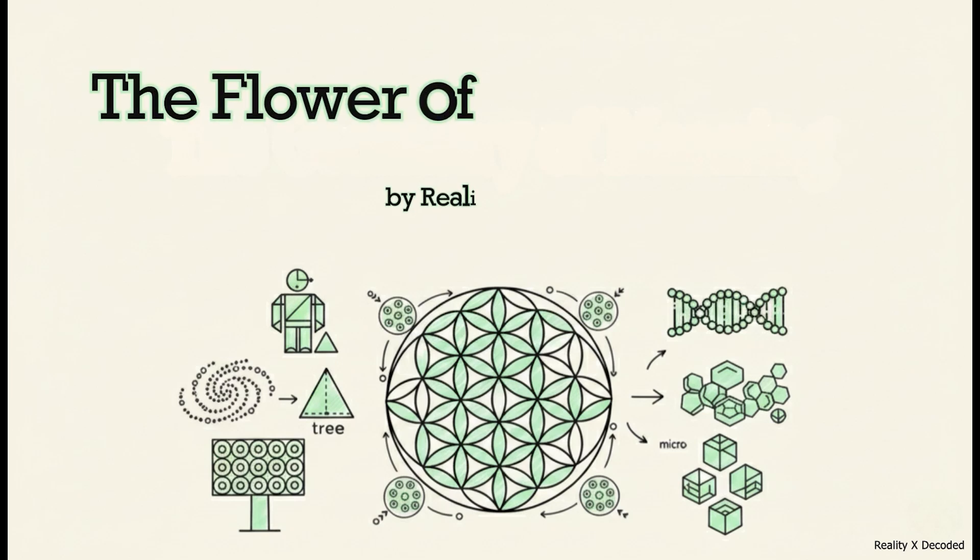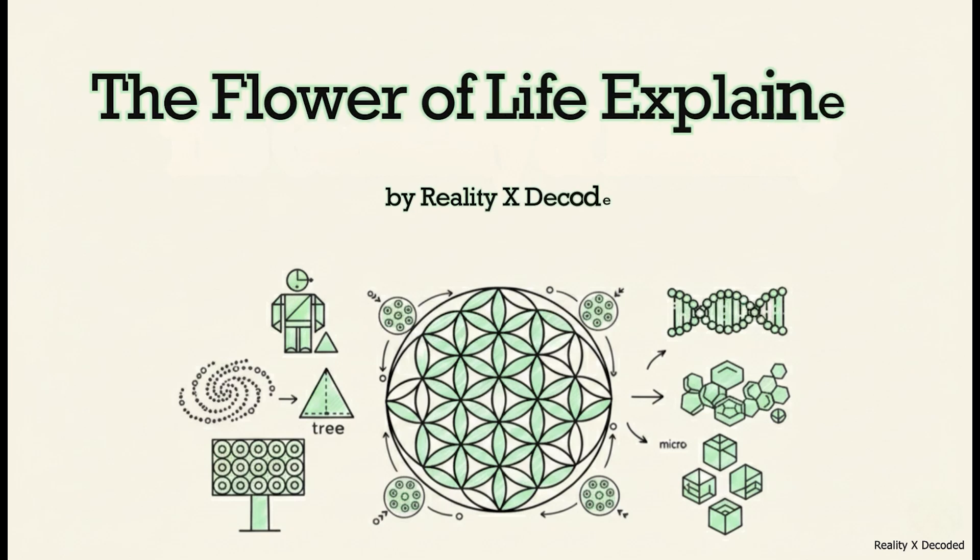Everything around us has a shape. People, trees, entire galaxies. But what if I told you that so many of those shapes, from the absolutely massive to the microscopic, all lead back to the exact same geometric pattern?